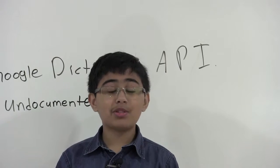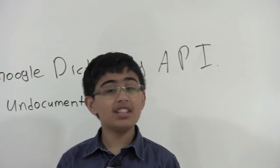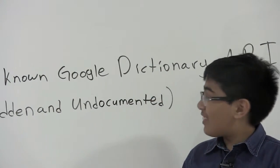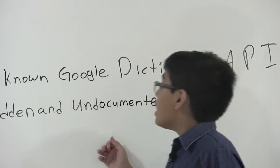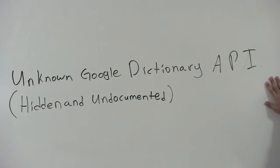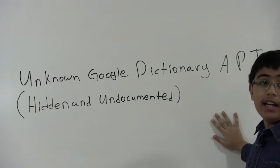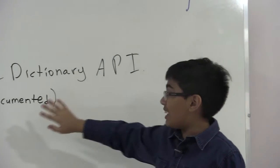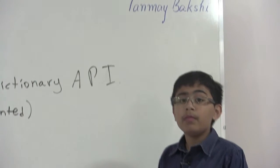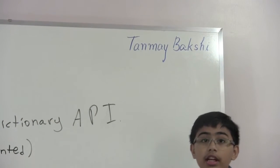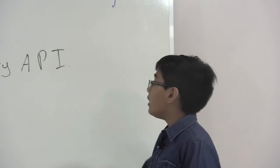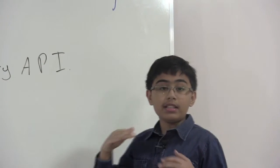Hello and welcome to another tutorial. My name is Tanya Bakshi and this time we're going to be going over the unknown — you could also call it hidden and undocumented — Google Dictionary API. This is a pretty special API since hardly anyone knows about it because Google does not document this feature. If you're looking to put a free dictionary API into your app, this is the way to go.